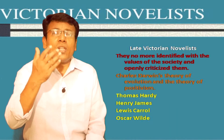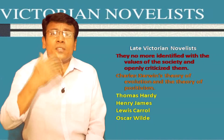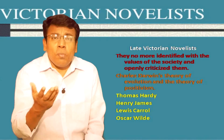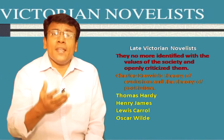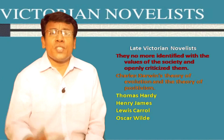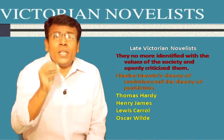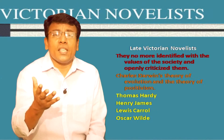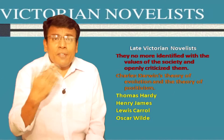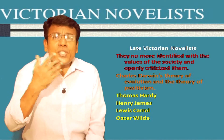The late Victorian novelists — those of the second half of the 19th century — no longer identified with the values of society and openly criticized them. They were much influenced by Charles Darwin's theory of evolution and also by the theory of positivism. Positivism accepts only that which can be verified scientifically; things like metaphysics or life after death cannot be verified scientifically and are therefore not accepted by positivists.